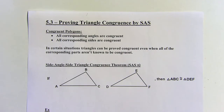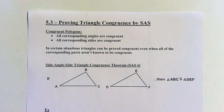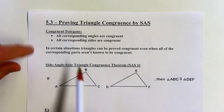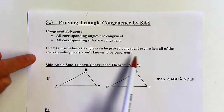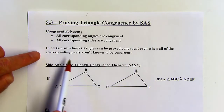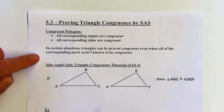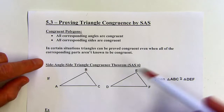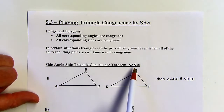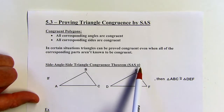You can always find all of the sides and all of the corresponding angles congruent to show that polygons are congruent. But with triangles, there are shortcuts. In certain situations, triangles can be proved congruent even when all of the corresponding parts aren't known to be congruent. This is the first of those shortcuts.